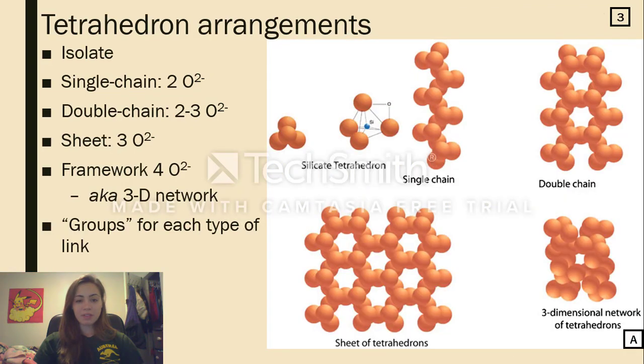Polymerization is what allows the silicates to take on a wide variety of physical appearances while maintaining similar chemical compositions. There are five types of tetrahedron arrangements, four of which form from polymerization. The simplest arrangement is the isolate or independent arrangement.